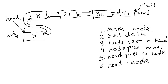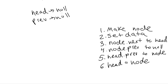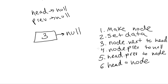Let's see what it looks like if we have an empty linked list — head referencing null and tail referencing null as well. Making the node and setting the data is fine. Setting node.next to head is fine since head is null. Setting node.prev to null is fine too. But setting head.prev equal to node is going to be a problem, because head is null, and trying to reference head.prev gives us a null pointer exception.